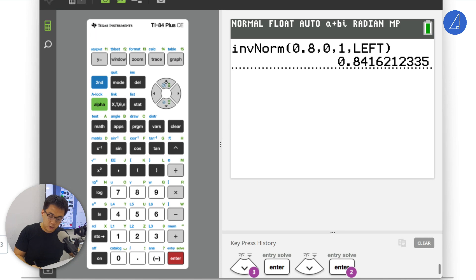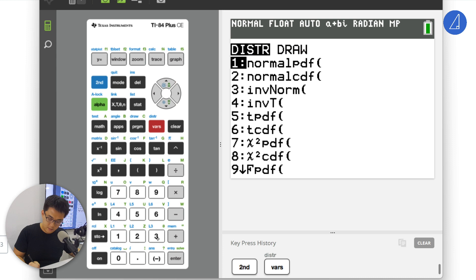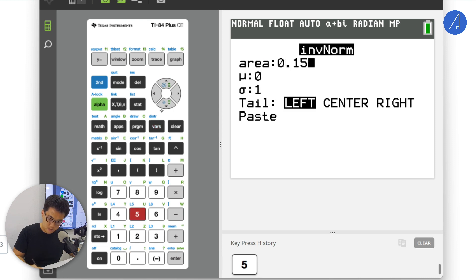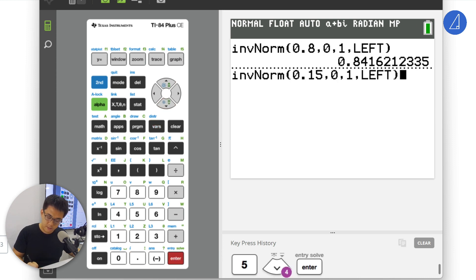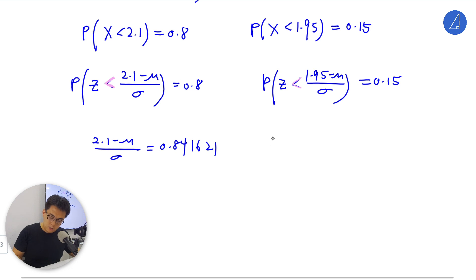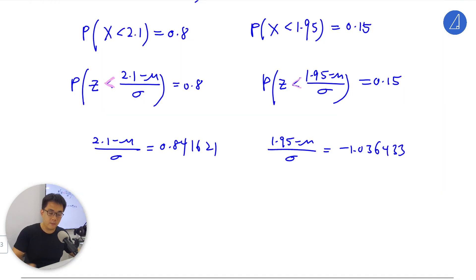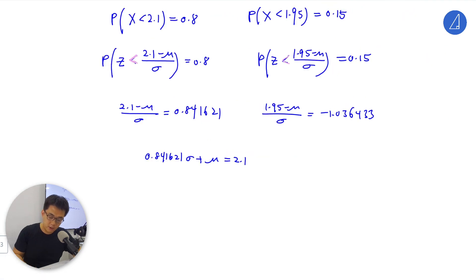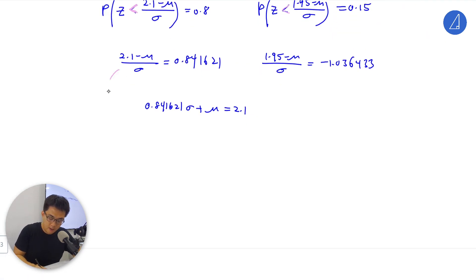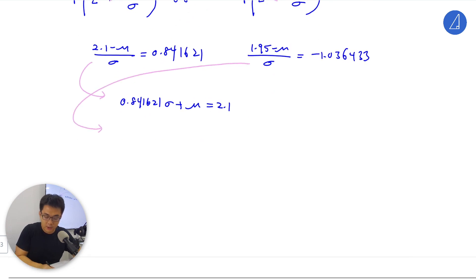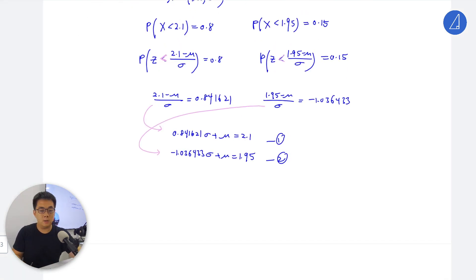Then 0.15, same thing, left side. (1.95 - mu)/sigma equals negative 1.036433. So rearrange to solve simultaneously, solve equations 1 and 2.